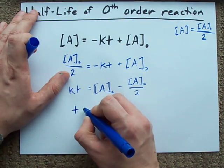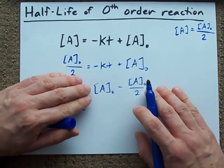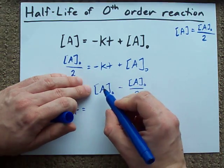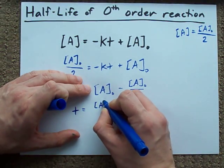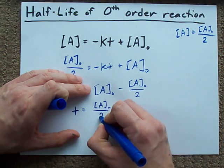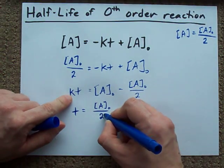So my T is the right-hand side. This minus half of that leaves you with half of that, divided by K.